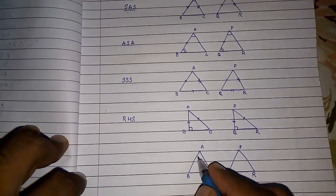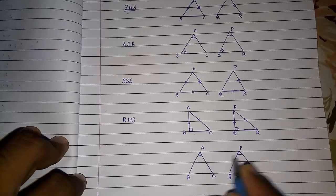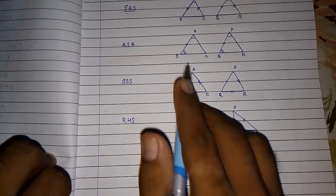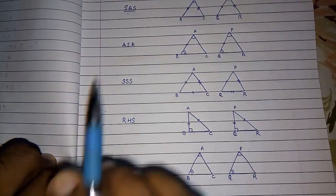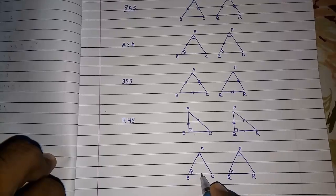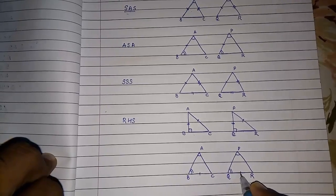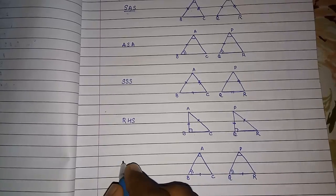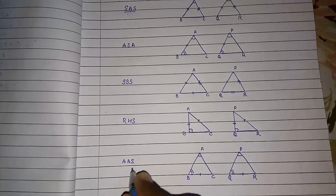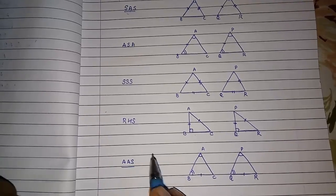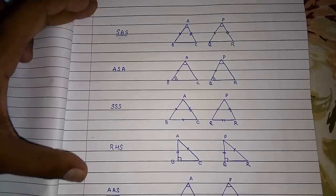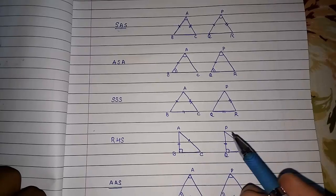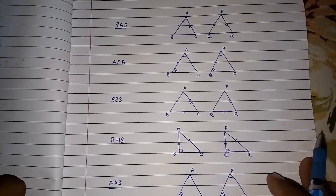The last rule is Angle-Angle-Side (AAS). Earlier we learned about two angles and the side between them (ASA). Now, if two angles are equal and a side other than the one between them is equal, then also we can say these two triangles are congruent by the Angle-Angle-Side rule. So these are the five rules by which, without finding all angles and all sides, we can prove triangles are congruent.